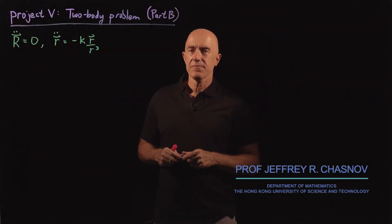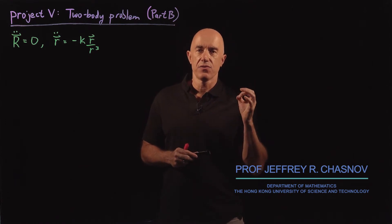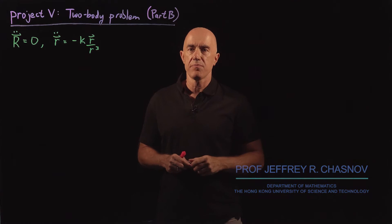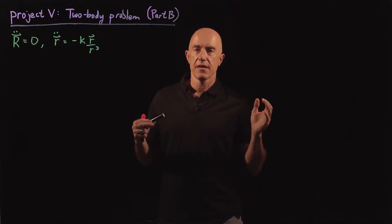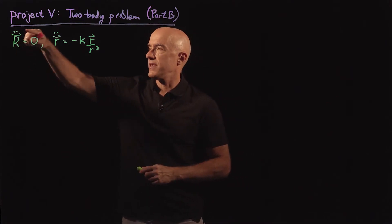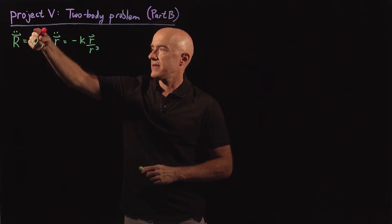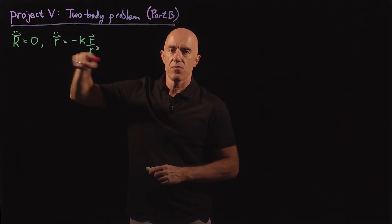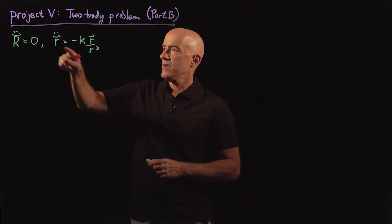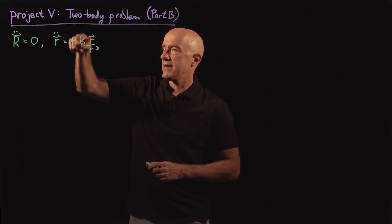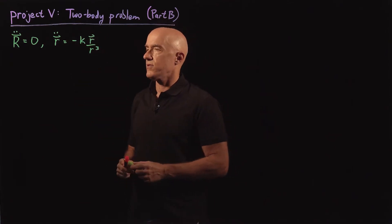In the last video, I showed you how to reduce the two-body problem to a one-body problem using the center of mass coordinates. We got the equation for the center of mass, capital R, meaning that its acceleration is zero. And we got the equation for the relative position vector of the two masses, r double dot equals minus k r vector over r cubed.